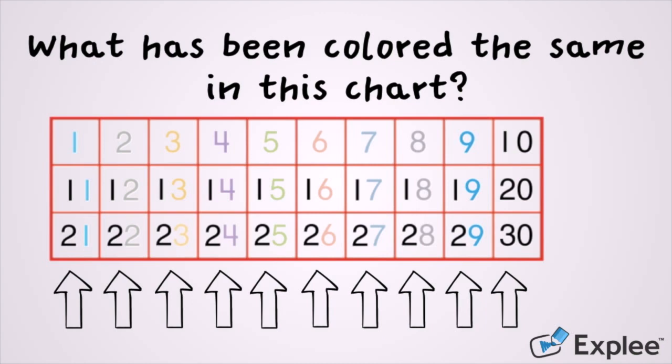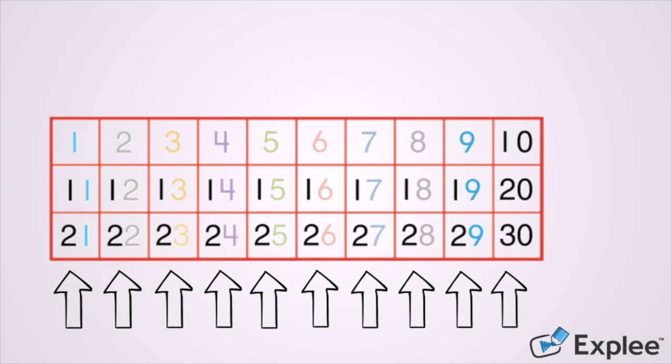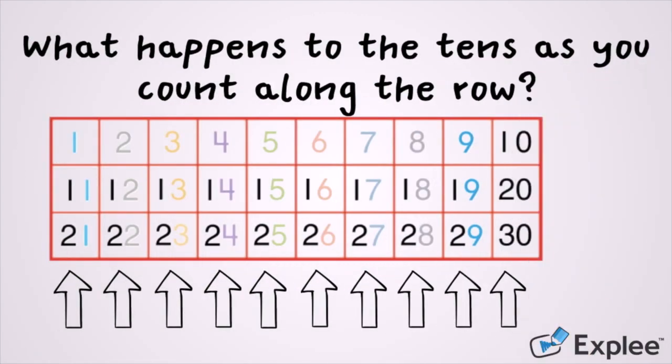The second column, all of the twos have been colored and so on. The part that has been colored is called the ones place. The part that has not been colored is the tens place.